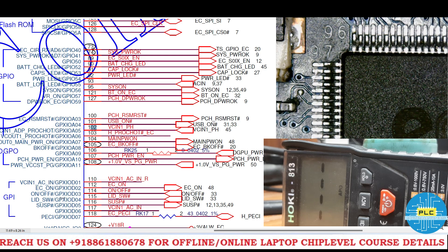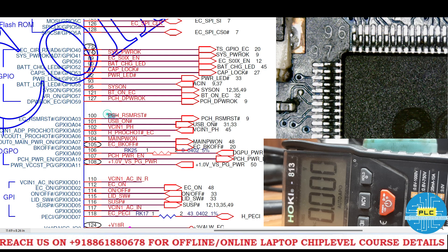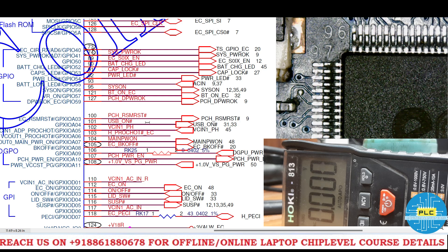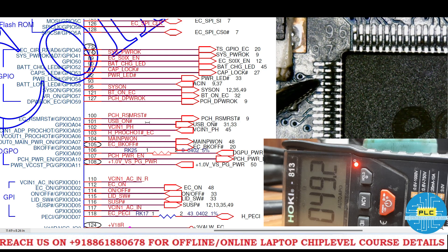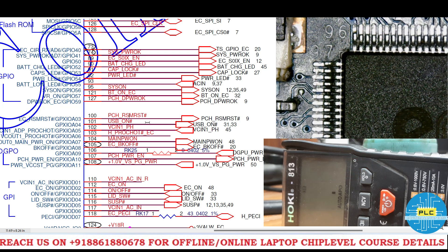Now all outputs have been shown. One more important voltage is RSM_RST. Until and unless you get EC ON, you won't get RSM_RST. See here - the RSM_RST signal is in LOW at this point. These are all the inputs and outputs the IO will get before pressing the power button.